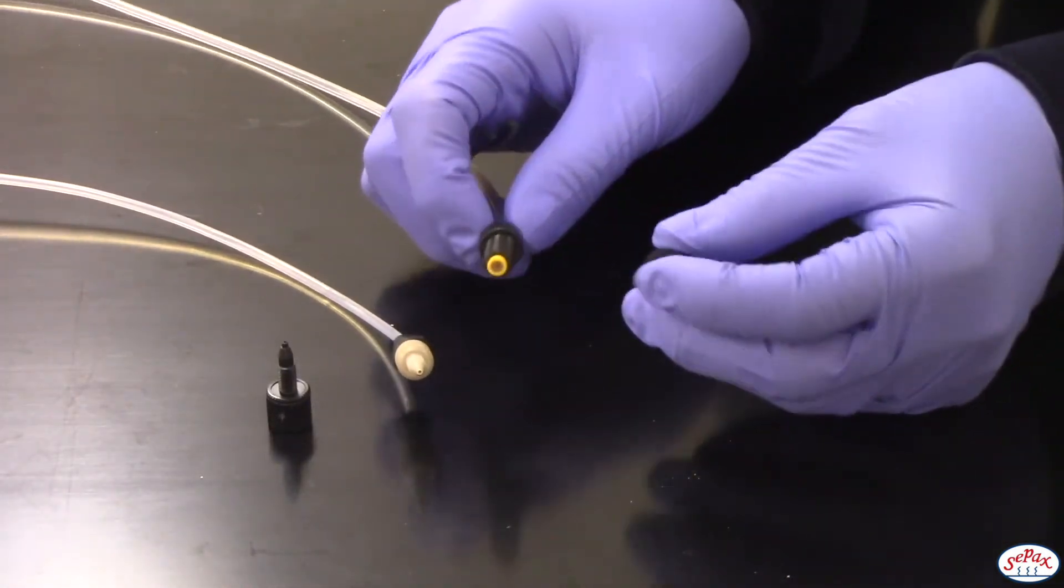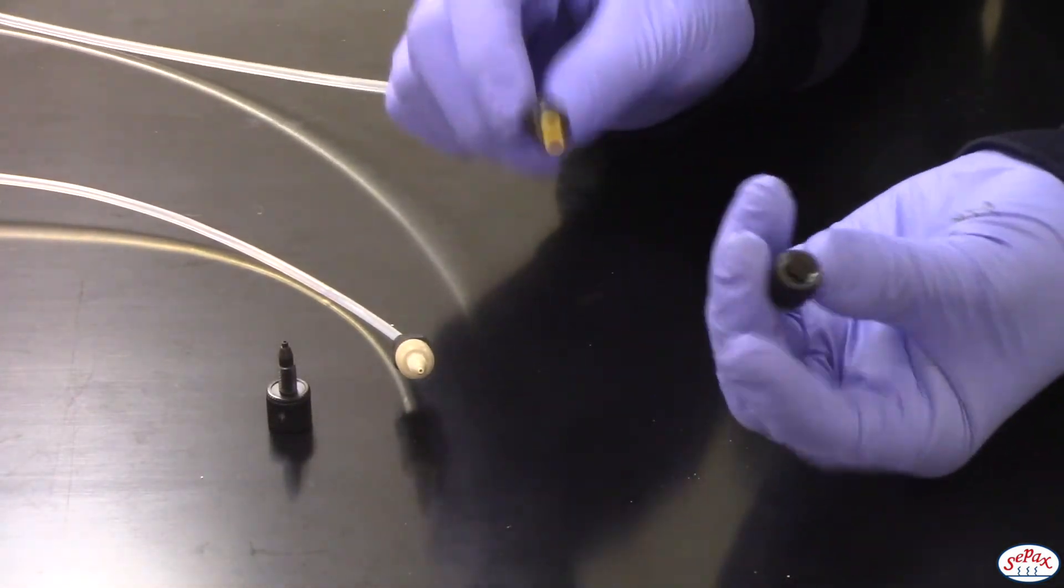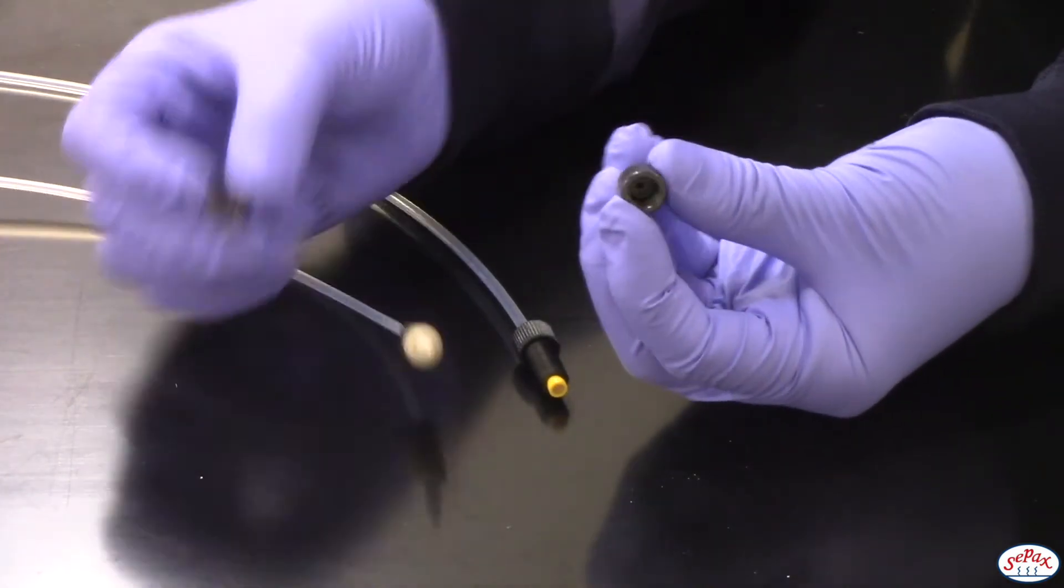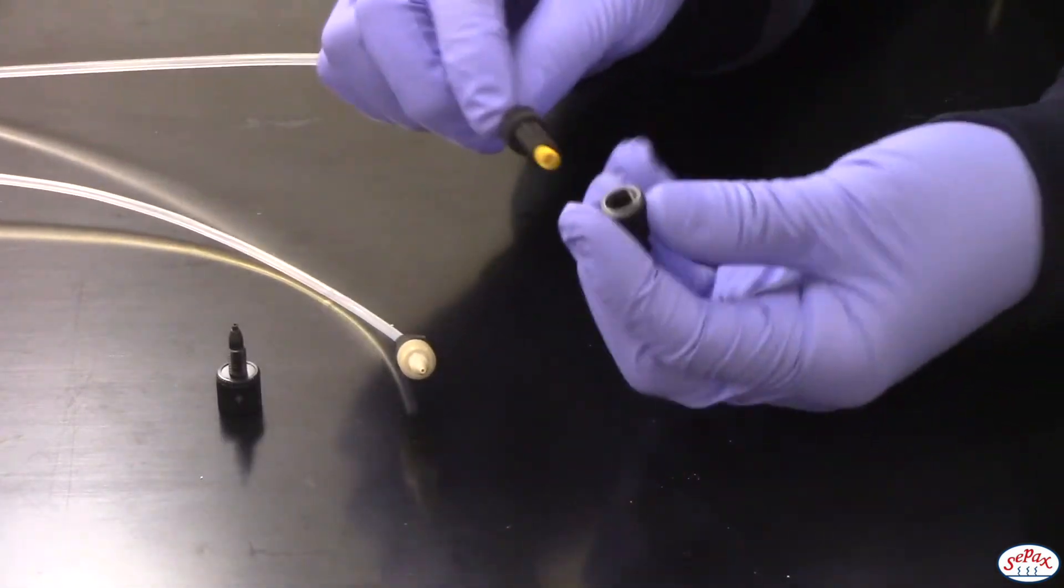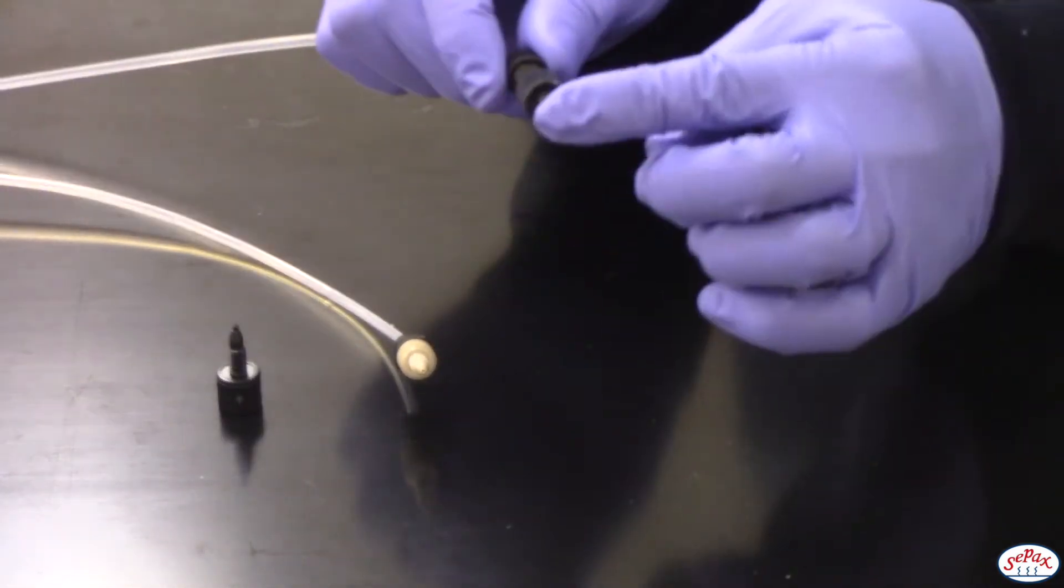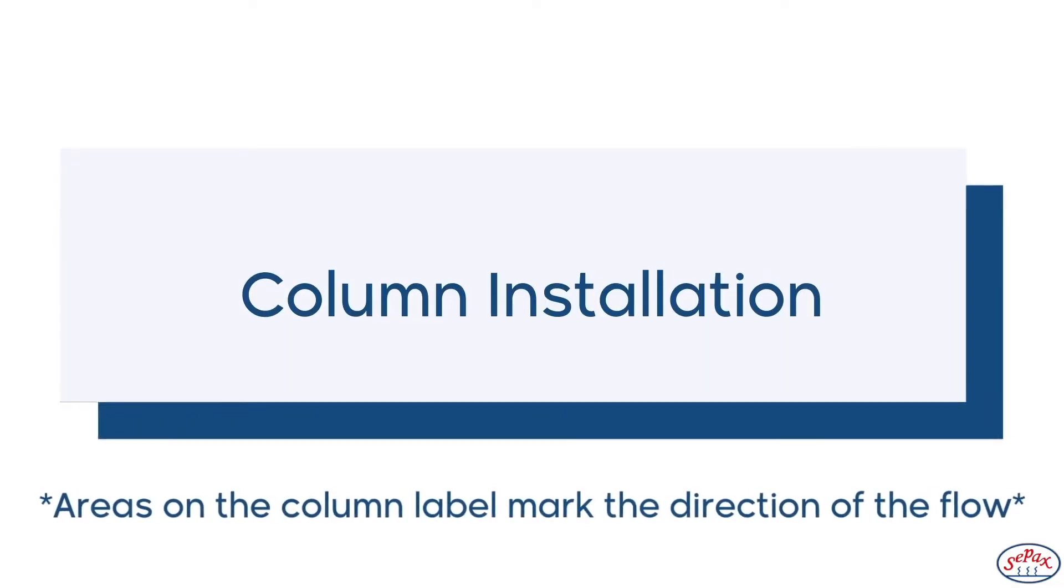The 5/16th connector on the 1/8 outer diameter tubing would screw into this union, which as you can see is larger than this one. And this is a 5/16th female to 1/16th male unit. And then you are ready to screw this onto your column.